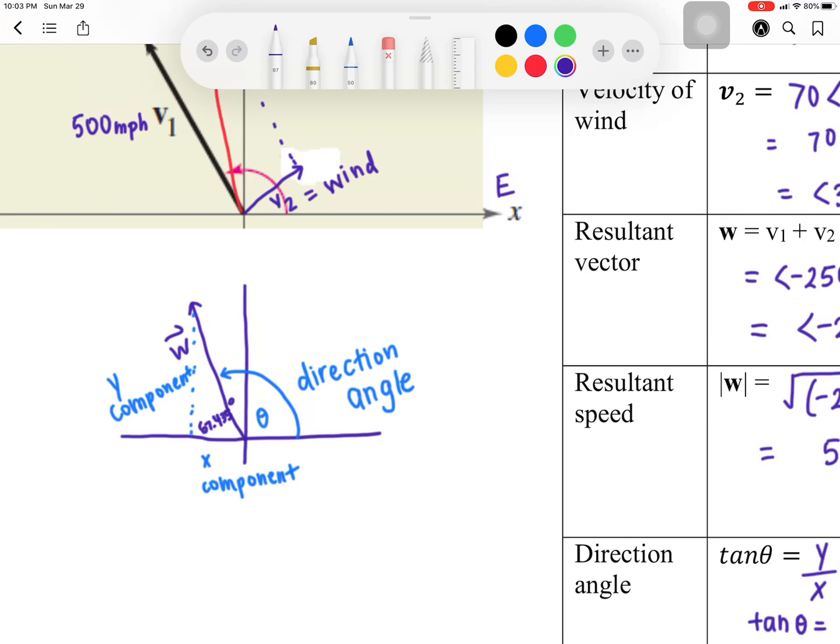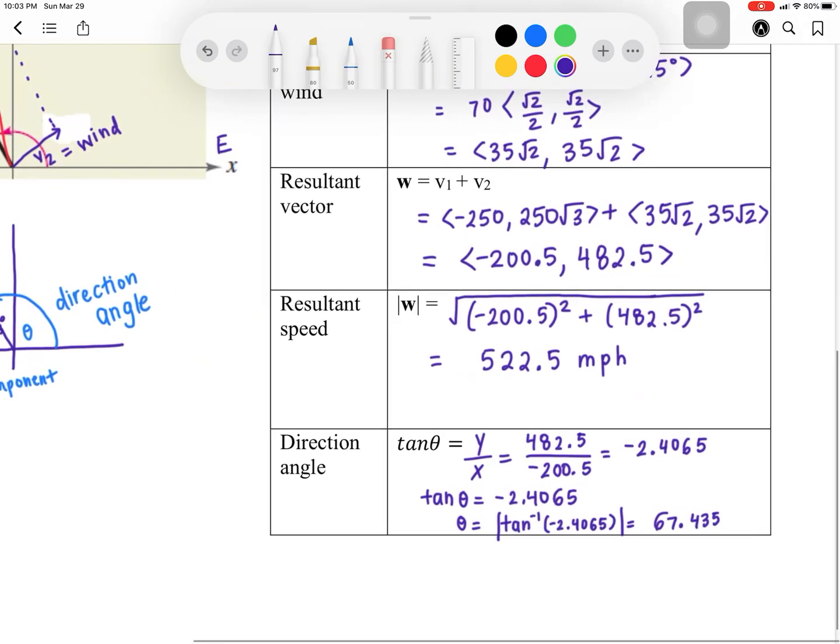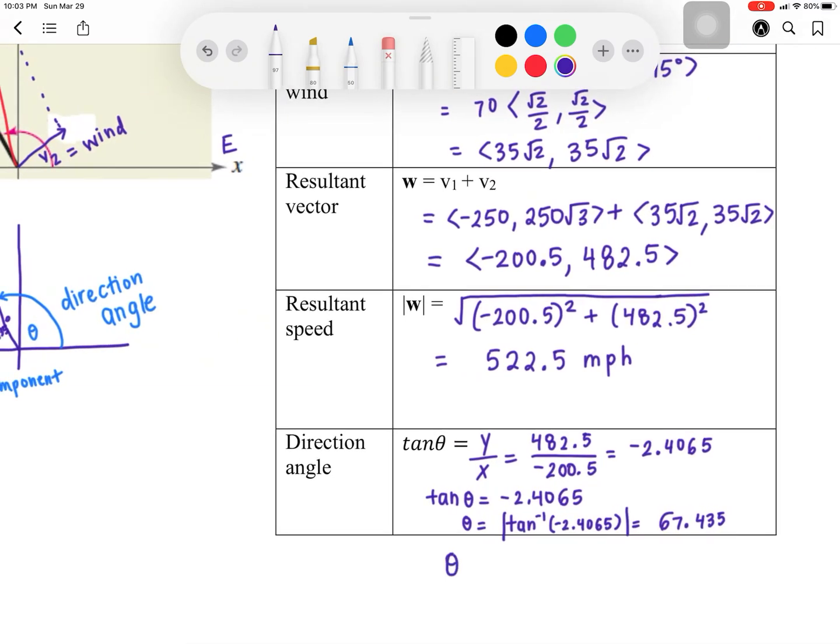That's not the direction angle that we want. How do we find it? Well, it forms a linear pair. So you just have to take, I'm going to say direction angle. So you're going to take 180 degrees, subtract 67.4. I'll just round it to 67.4. And that should give you 112.6 degrees.